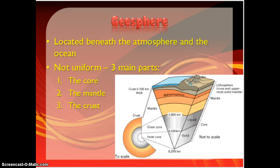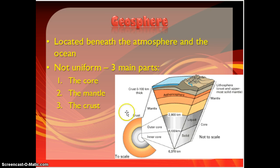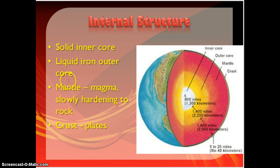If we start talking about the geosphere, that is the main layer of what you think of as the Earth — the land and the oceans. It's located just beneath the atmosphere, and technically it is beneath the oceans as well. We have three major parts to this: the core, the mantle, and the crust. We can actually figure out its composition based on some tests that they've been able to do.